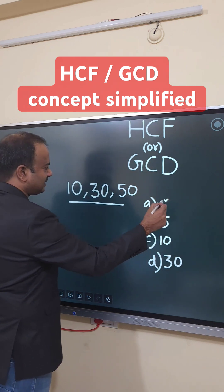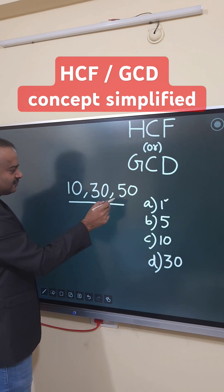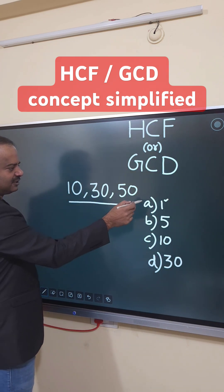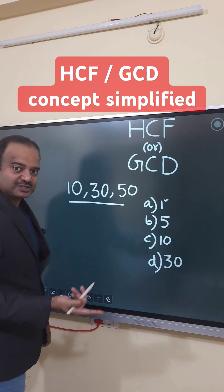Let's take one. One actually divides 10 — one 10 is 10, one 30 is 30, one 50 is 50. But is it the highest one?